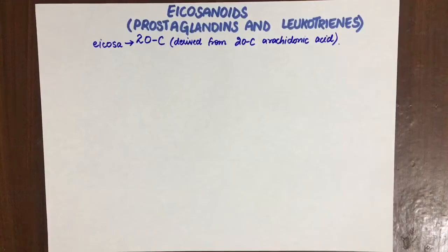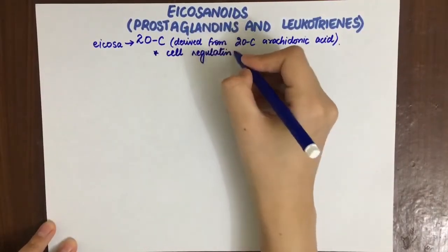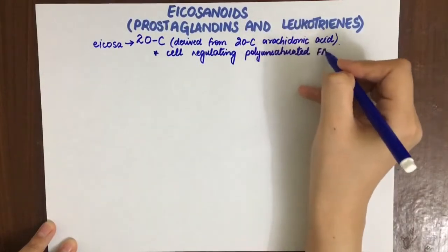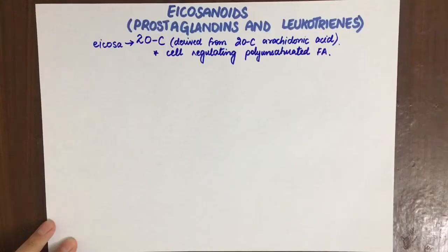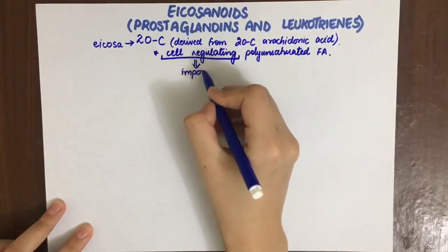Cell regulating polyunsaturated fatty acid - it has cell regulating function, and that makes it important. To understand this, we should first see how eicosanoids are made, then their functions, and then how we can manipulate them to our advantage. That's what we do best in pharmacology: manipulation.